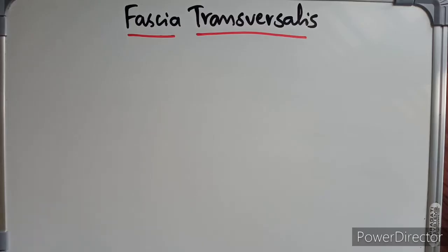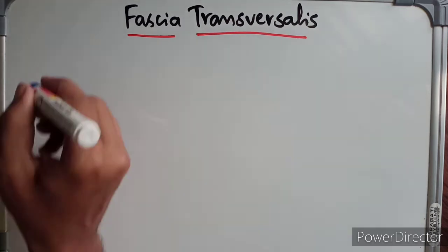Hello guys, welcome to Matten. In this video we are going to discuss about fascia transversalis. What is fascia transversalis? Fascia transversalis is a thin layer of fascia that lines the inner surface of the transversus abdominis muscle.